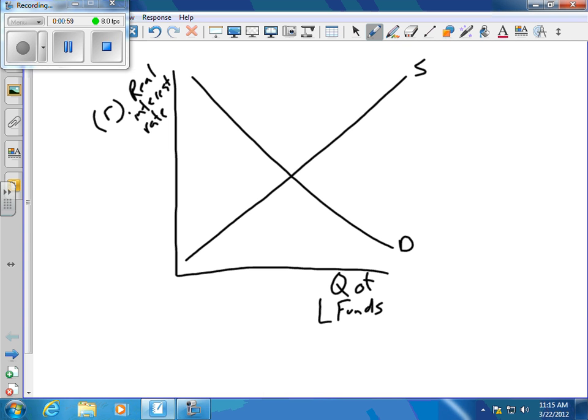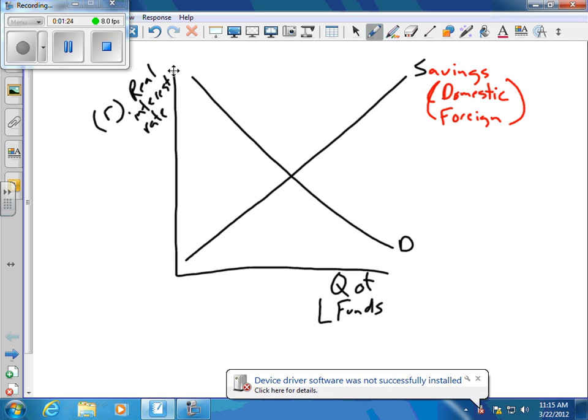The supply of loanable funds tends to come from savings, and those savings can either be domestic savings or foreign savings. They can also come from if the Fed increases the money supply, that would cause the supply to shift to the right. If they decrease the money supply, it causes the supply of loanable funds to shift to the left.